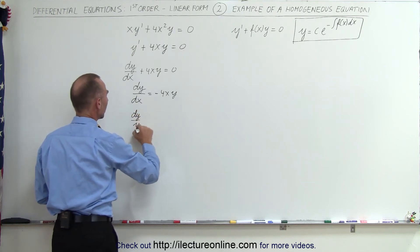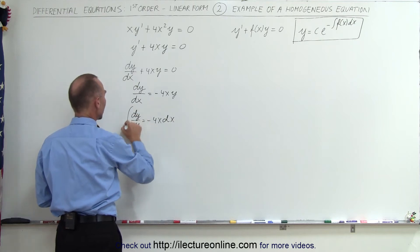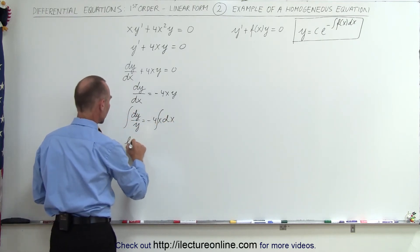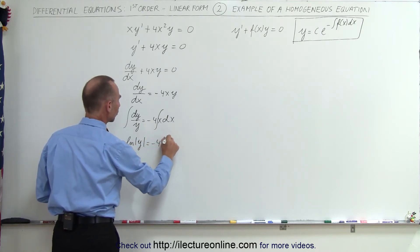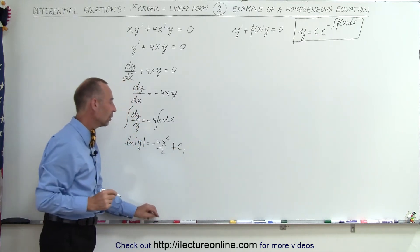Then we can integrate both sides. When we do, we end up with the natural log of y equals minus 4 times x squared divided by 2, plus some constant of integration, which I'll call c1.